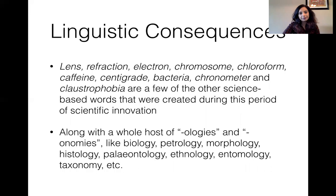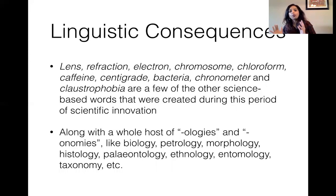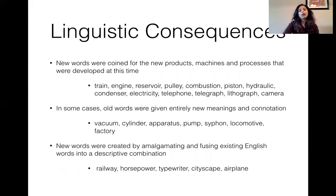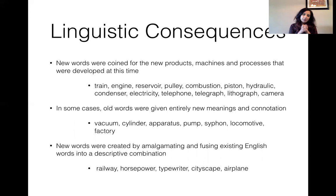Here are some words created during this period. Words ending in '-ology' or '-onomy' were created as late as 1800, and you start to see these fields come about as university departments or fields of research around this time. There were also new words coined for products and machines like train, engine, reservoir, combustion, hydraulic, lithograph, and camera. In some cases, old words were given entirely new meanings, like vacuum, cylinder, pump, and locomotive.